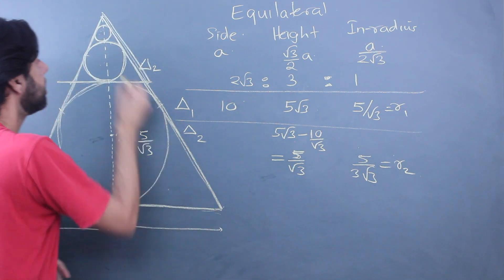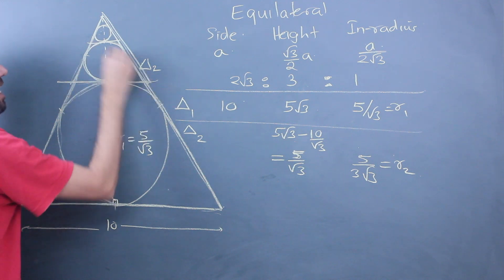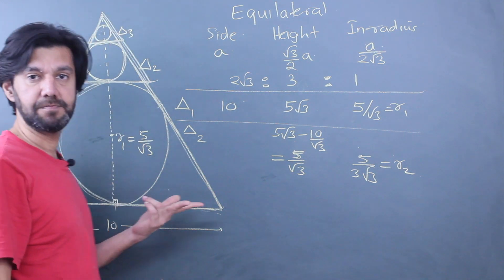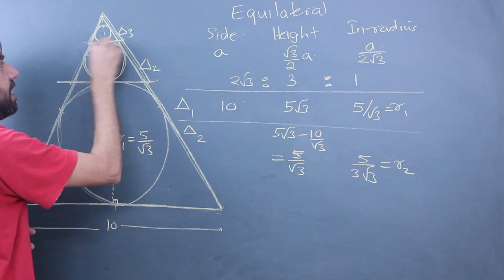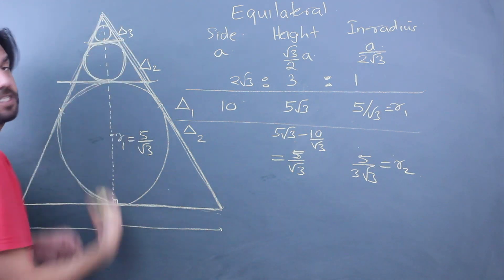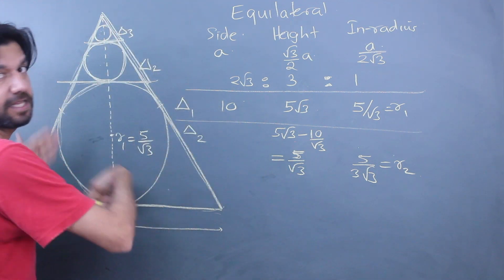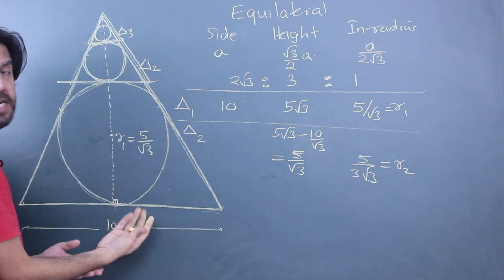The relation between the second and the third triangle is going to be identical to the relation between the first and second. If I would have just erased this and expanded this, it's going to look identical, right? So r3 here...